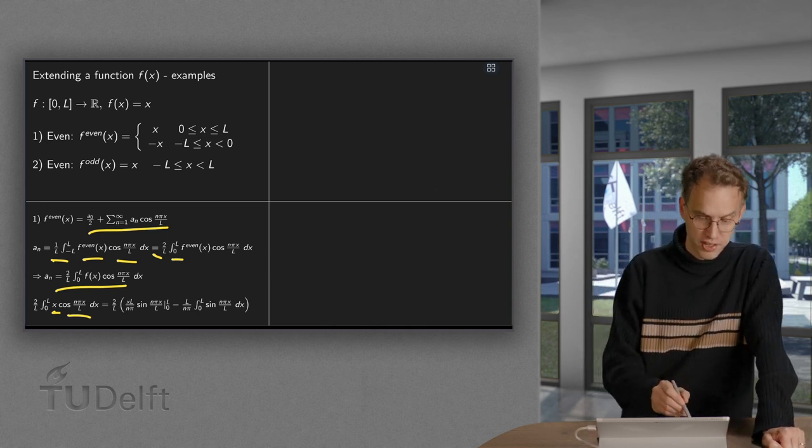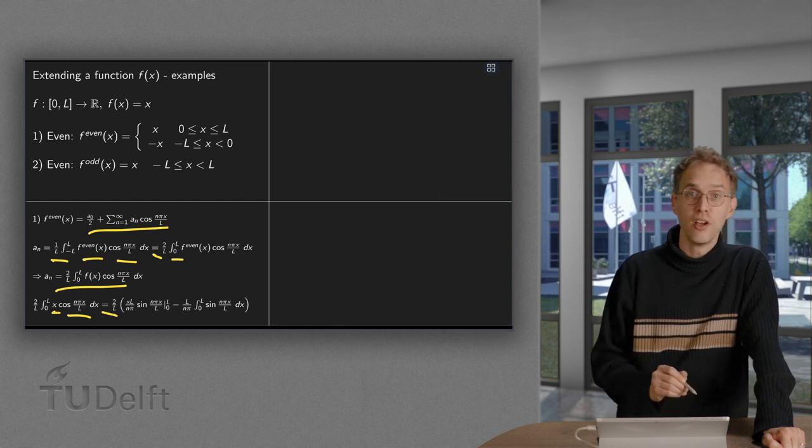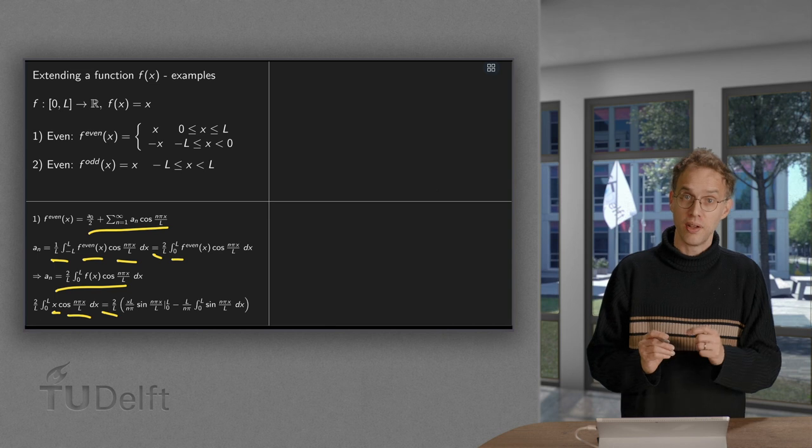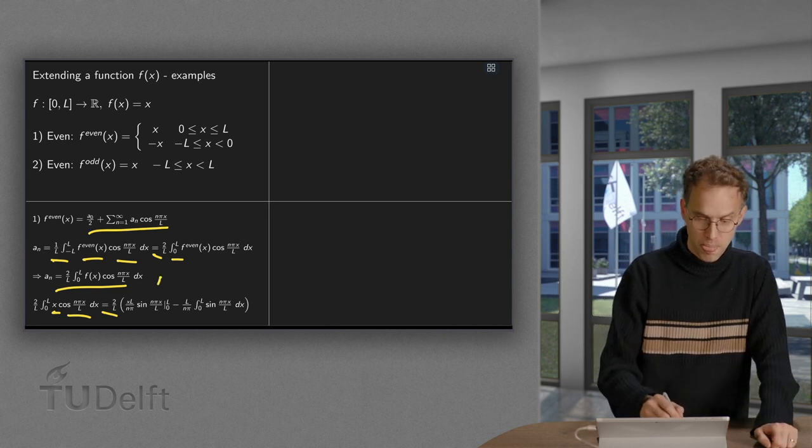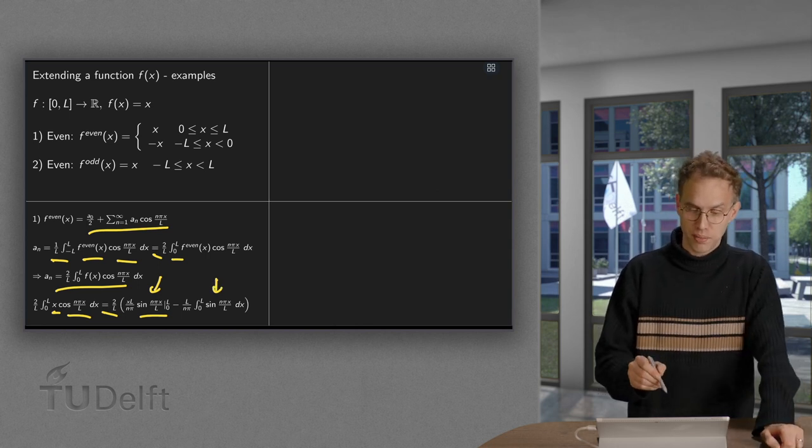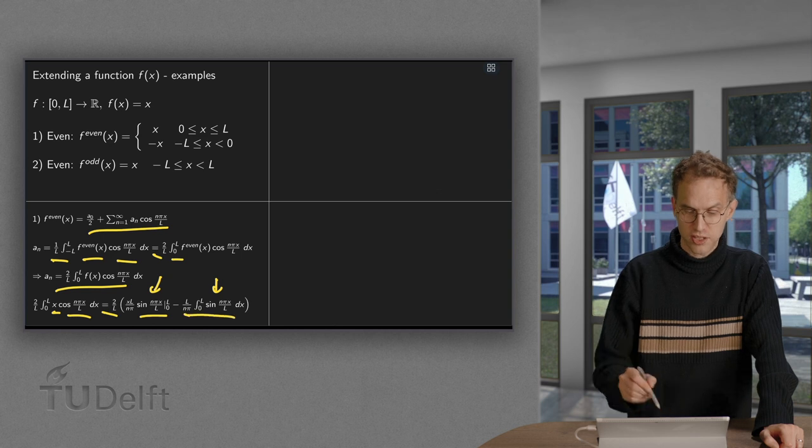We use integration by parts for that. 2 over l stays in front. First integrate the cosine, you get the sine of n pi x over l times l over n pi between the boundaries, minus the integrated function times the derivative of x becoming 1.